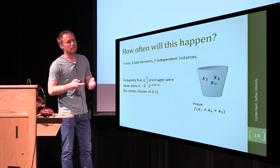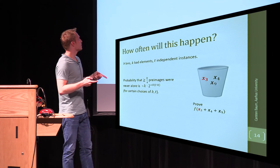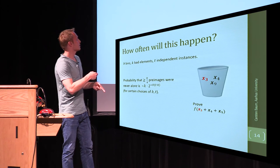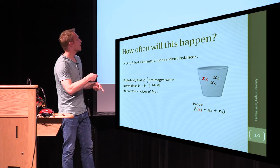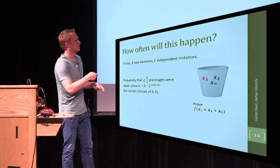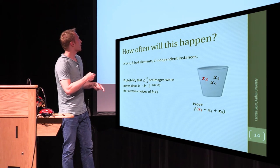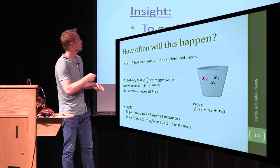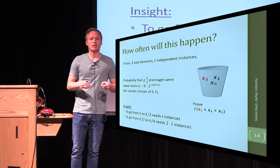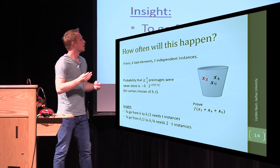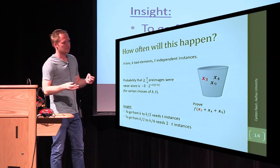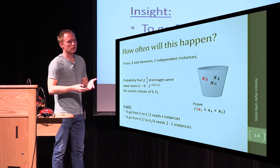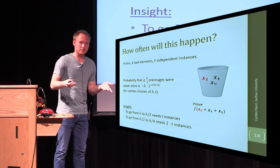But unfortunately, this goes... the probability goes actually down in the number of bad pre-images, right? So, if we have, let's say, in one round, if we have extracted half of them, then in the next round, with only probability 2 to the minus k over 2, we can extract the rest. So, we actually have to play this game now two times, right?